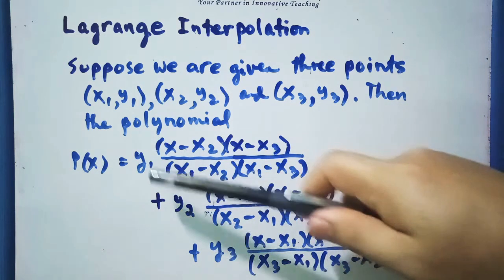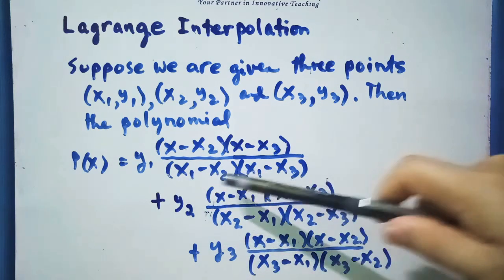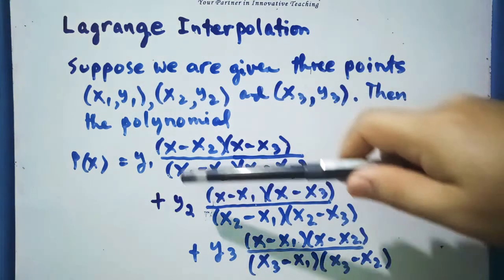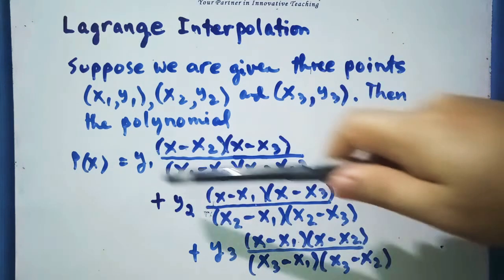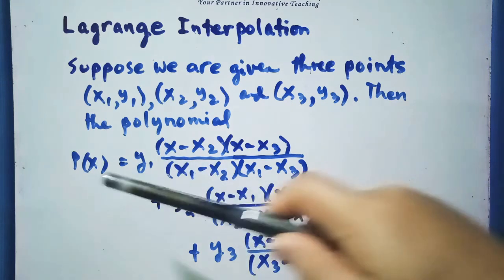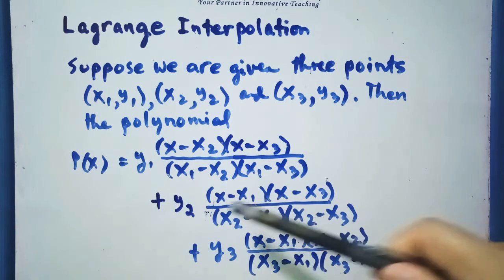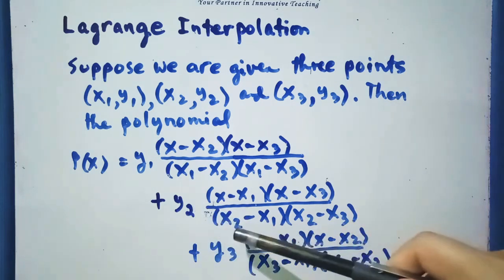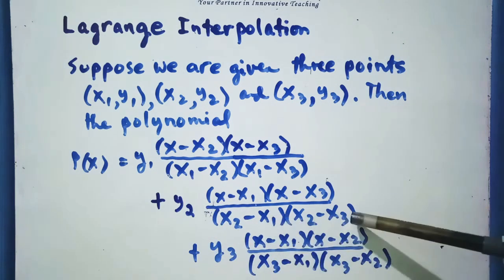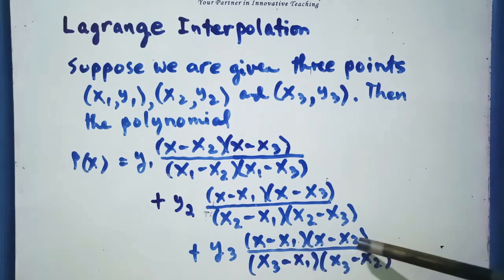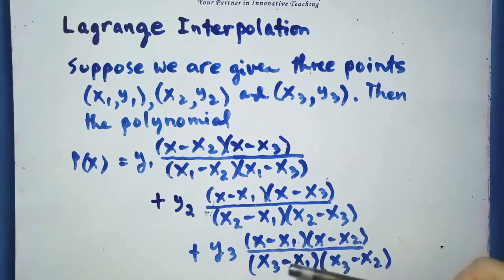And then its denominator, if this is y sub 1, we have x sub 1 minus x sub 2 times x sub 1 minus x sub 3. Then plus y sub 2 — since we have 3 points given, we have y sub 1, y sub 2, and y sub 3. So plus y sub 2 times x minus x sub 1 times x minus x sub 3, divided by x sub 2 minus x sub 1 times x sub 2 minus x sub 3. Plus y sub 3 times x minus x sub 1 times x minus x sub 2.